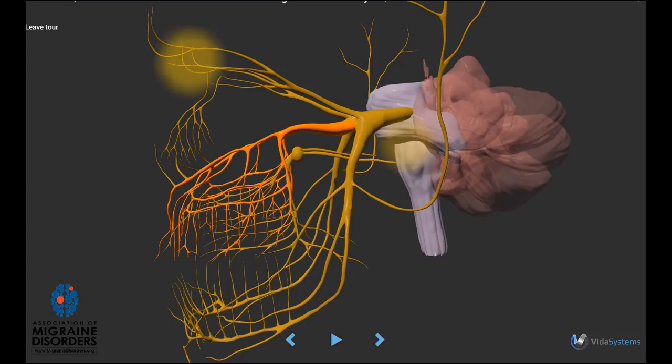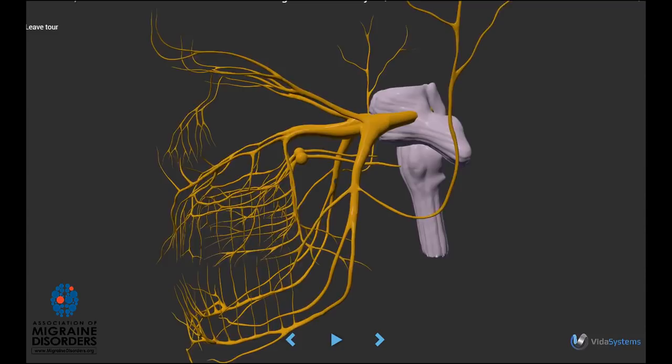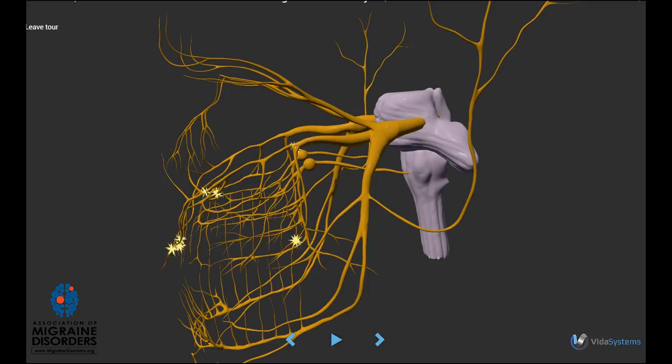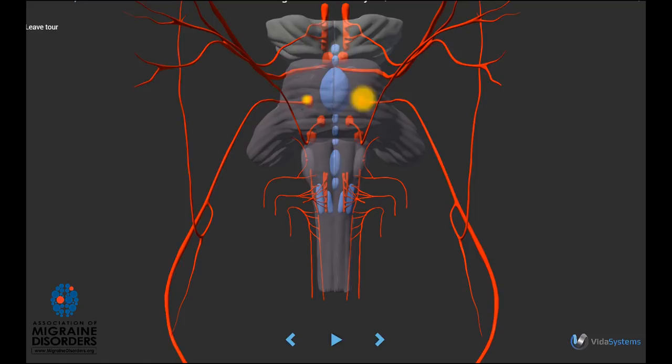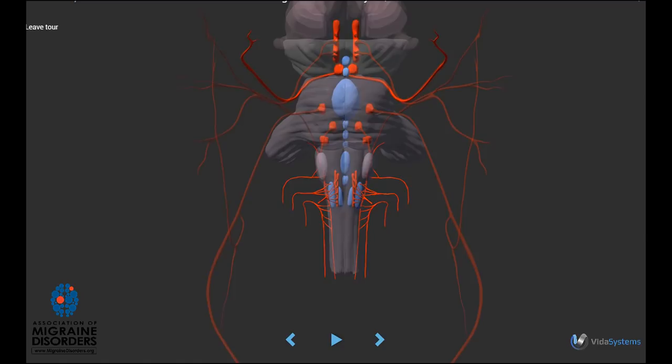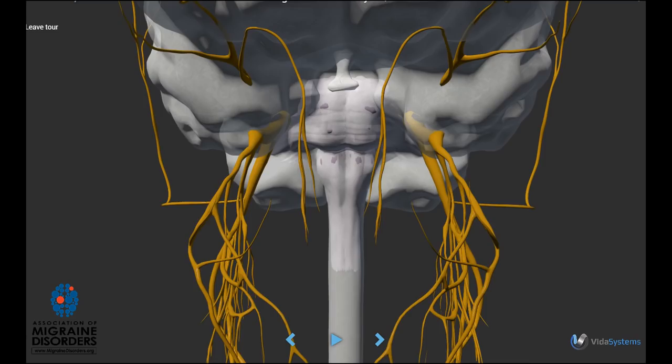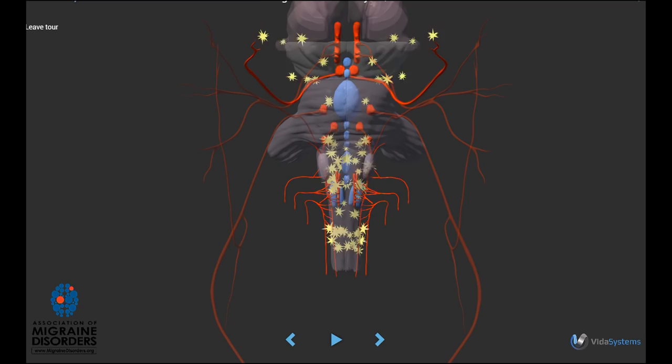signals are relayed along the trigeminal nerve back to the trigeminal nucleus in the trigeminal cervical complex of the brainstem. Think of a brain nucleus as a transfer station in an electrical grid where the signal can be strengthened and redirected to other parts of the brain. From the brainstem, neurologic activity can potentially affect several different aspects of the central nervous system.